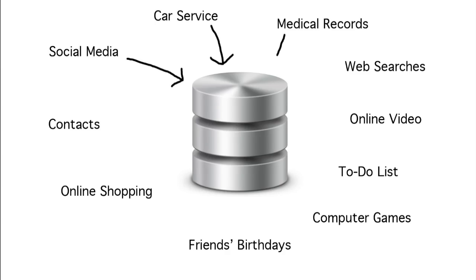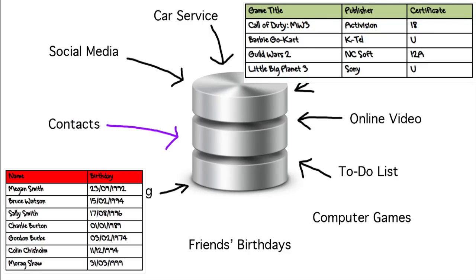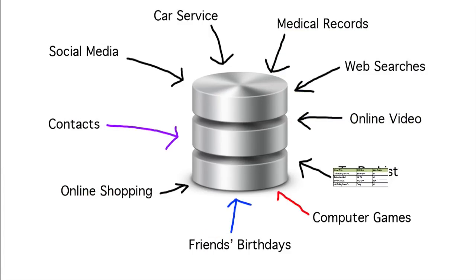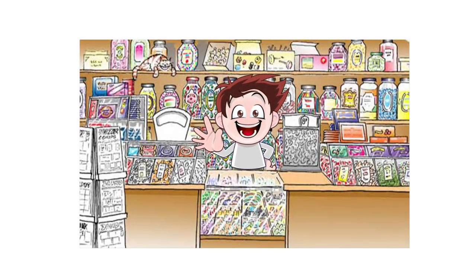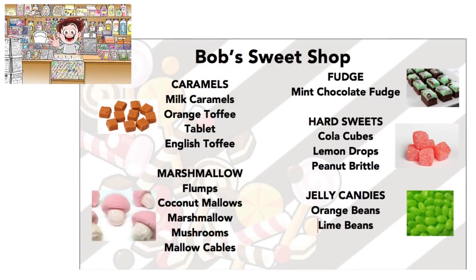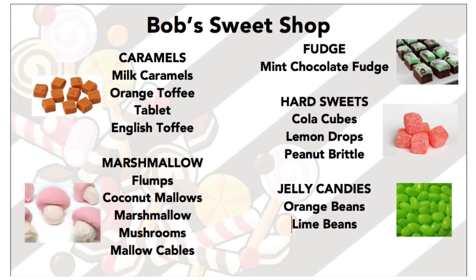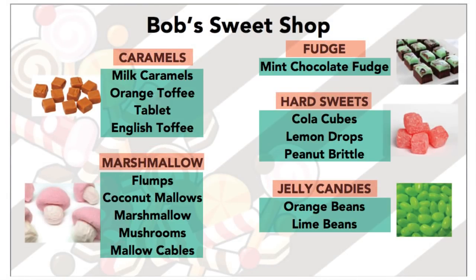We use databases to store much of the data in our world. Flat file databases are simple databases that store information about uncomplicated things — the contacts in your phone, the birthdays of your friends, the list of computer games that you own. This is Bob, and he runs a sweet shop. His customers can choose confectionery from a large menu displayed in his shop, which has five different categories of sweets with several sweets in each category.